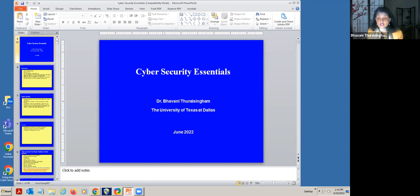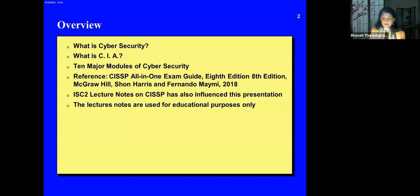So, cybersecurity essentials — I'm going to talk about 96 charts. First, what is cybersecurity? What is CIA? CIA here does not mean Central Intelligence Agency. Then I'll talk about 10 major modules in cybersecurity.